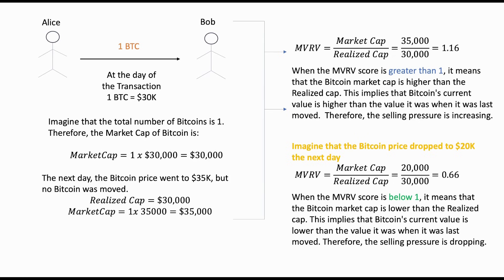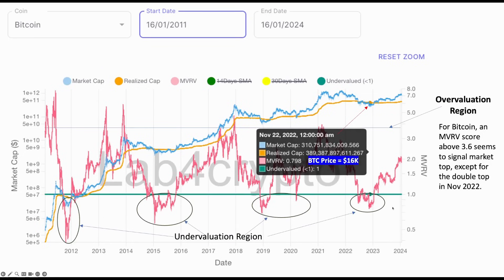By observing Bitcoin data, we can see that when the MVRV is less than 1, it is a great time to accumulate. And when it is above 3.6, it signals the market top. Looking at the MVRV graph, when MVRV was below 1, it historically signaled the Bitcoin bottom — I have circled these areas so you can better visualize them. When MVRV was above 3.6, above the blue line, it signaled the Bitcoin top.